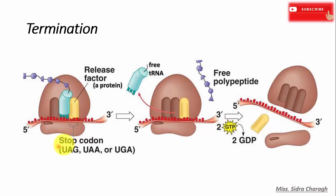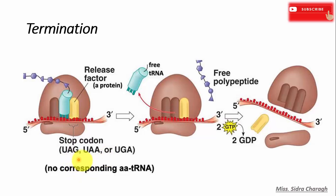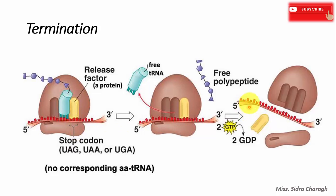There are three stop codons: UAG, UAA, and UGA, and none of these have a corresponding transfer RNA. When the ribosome encounters a stop codon, a release factor binds to the stop codon at the ribosome A site, and the polypeptide chain and the messenger RNA are released. The large and small ribosomal subunits then separate.